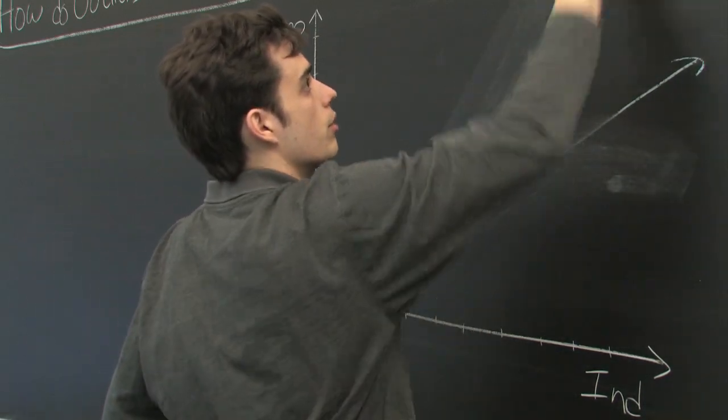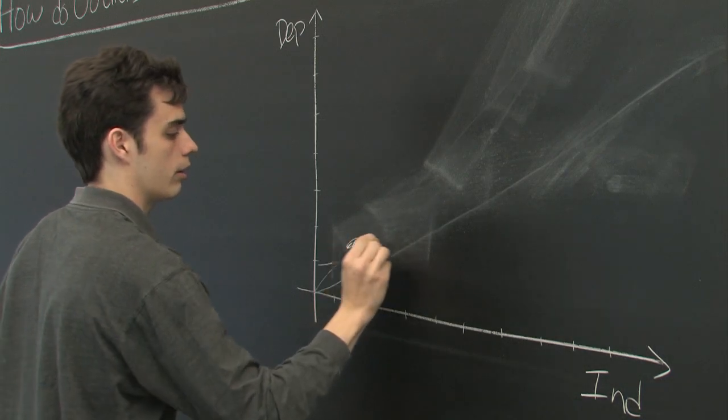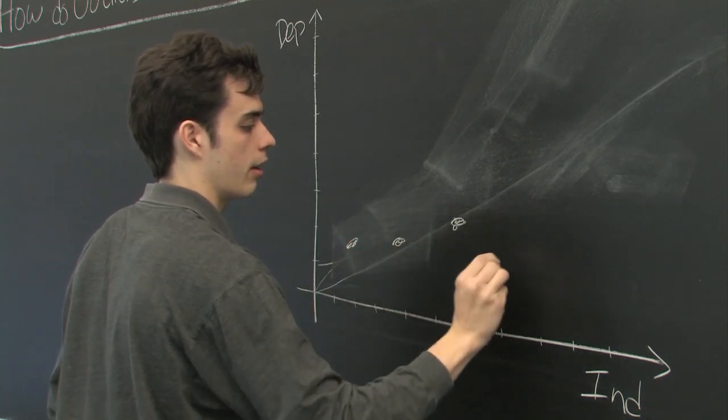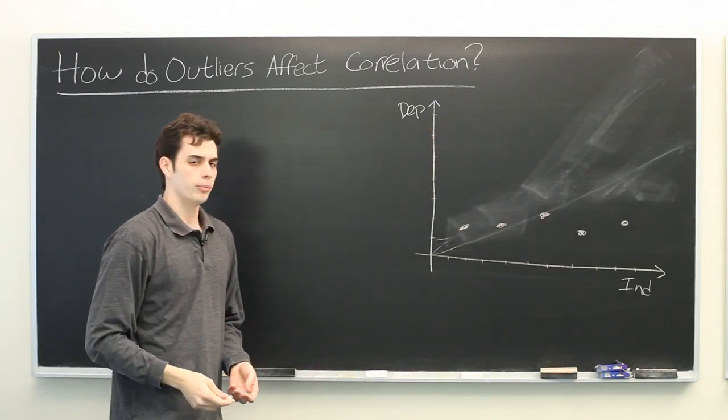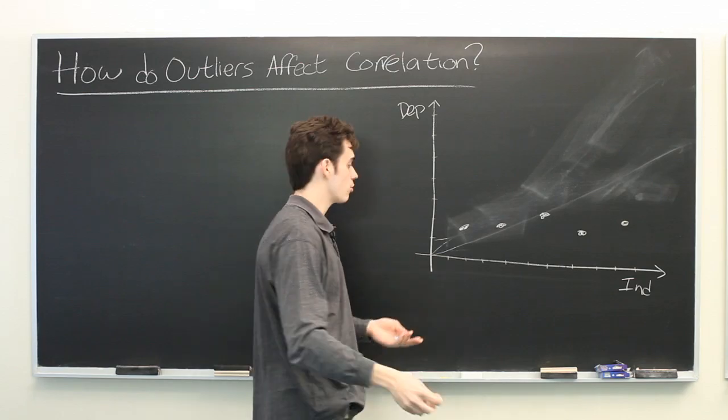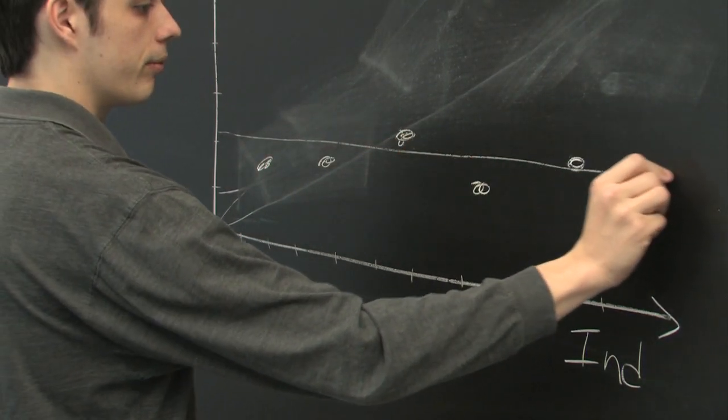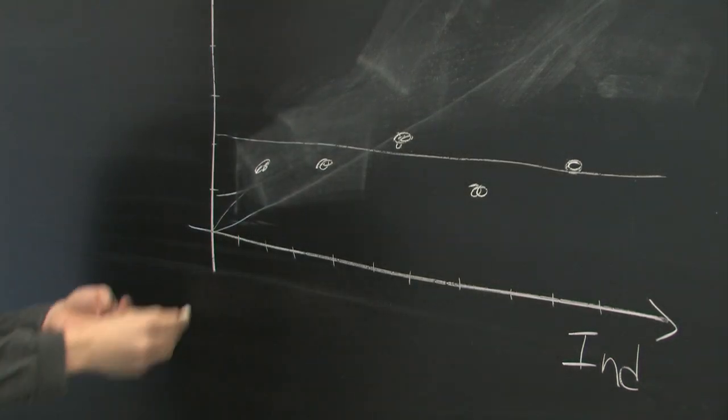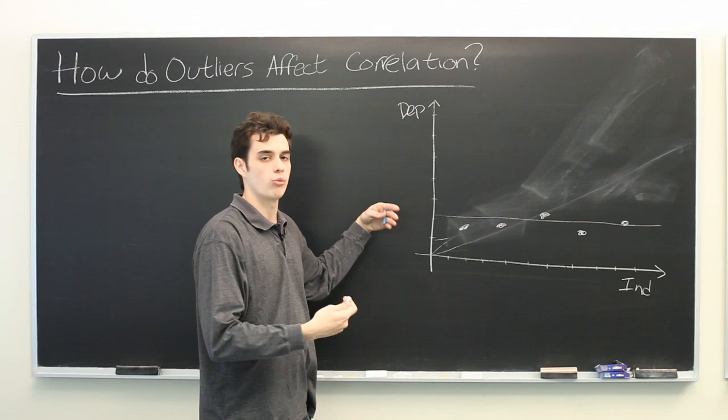Similarly, let's work with a new data set. If we look at this data set here, it seems pretty apparent even though we don't have all that many entries that there is no correlation between the variables. As this quantity increases, this quantity stays roughly the same.